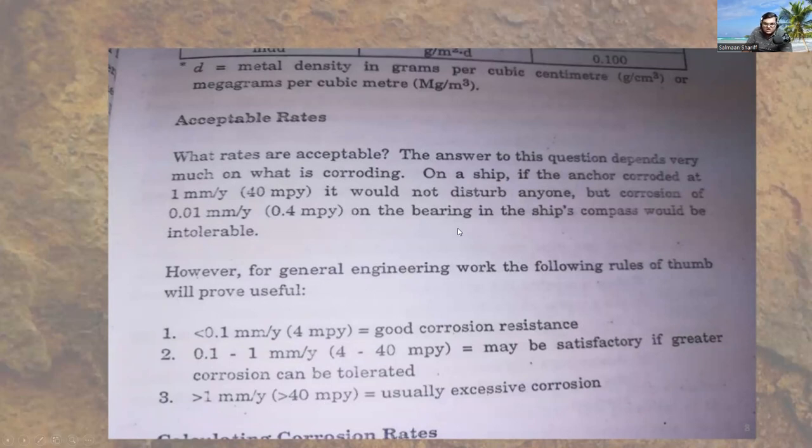As you can see with the example here, on a ship, if the anchor is corroded at a rate of 1 millimeter per year, it would not disturb anyone as it is negligible corrosion. But at the bearing of the ship's compass, which is a small surface area, if the corrosion is 0.1 millimeter per year, that is 0.4 mils per year, it becomes intolerable due to the small surface area.